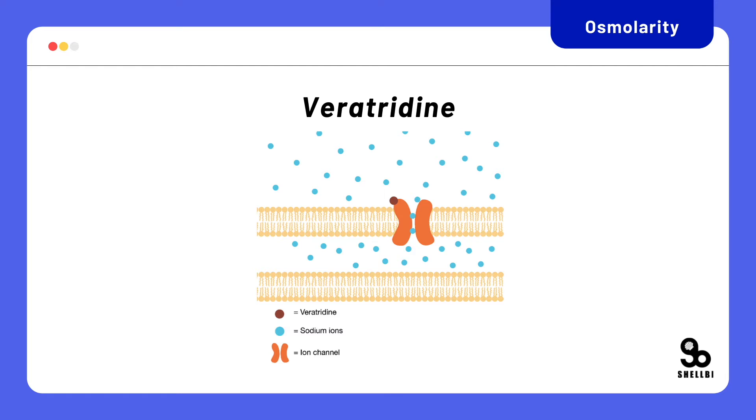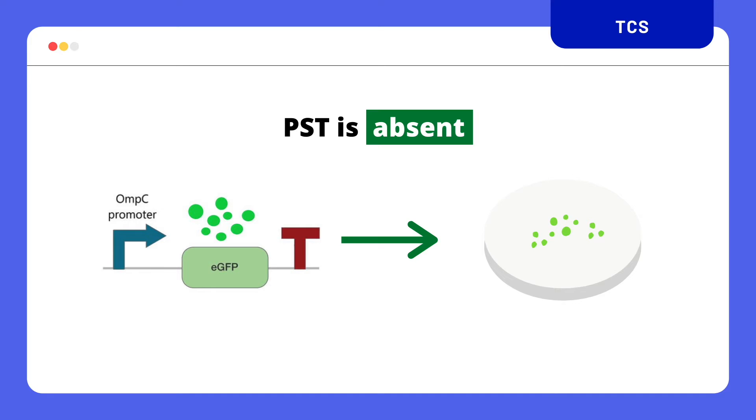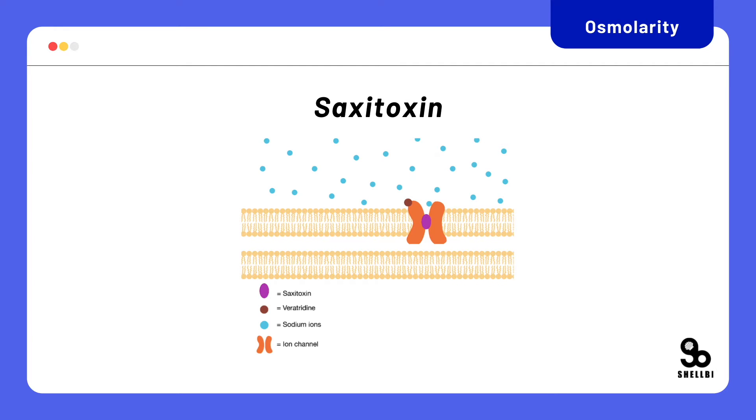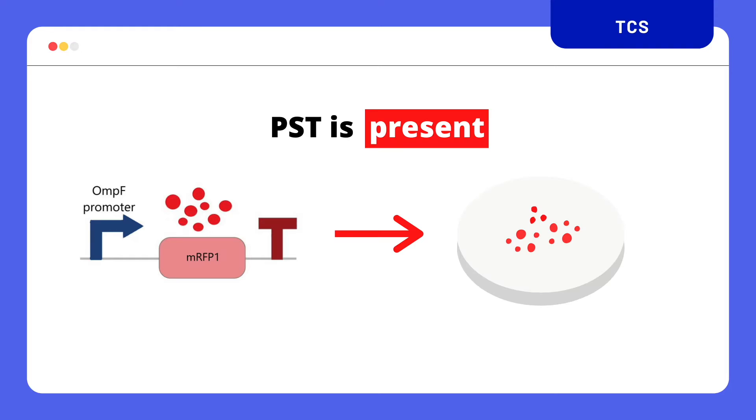Conceptually, in the absence of PST, veratridine will cause an ion influx into the cell, activating the OmpC promoter and giving a green fluorescence feedback. On the other hand, in the presence of PST, ions in the cells will start to decline, rendering the OmpF promoter active and a red color fluorescence will be observed.